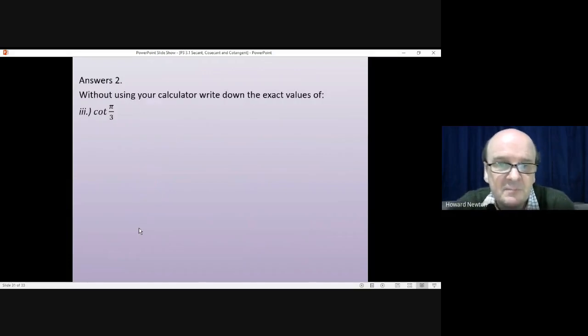Third question, cotangent of pi by 3. Pi by 3, I think the very first thing I'd do would be to change that to degrees. I still, even after a very long time, prefer to work in degrees than radians, and normally, unless it's really not wise to in the question, I would convert from radians to degrees. Certainly for a question like this, I would do.